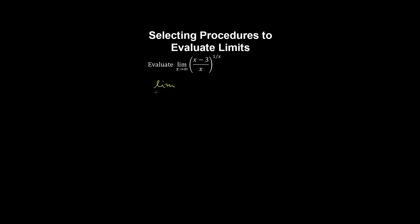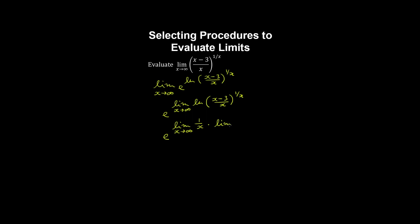Let's evaluate the limit of this function as x goes to infinity. Because x appears in the base and the exponent, we can apply the exponential function and natural log to simplify the limit. Because the exponential function is continuous, we can assume it's continuous at the limit of the natural log. We apply the rules for logarithms to put the exponent outside the natural log, and apply the product rule for limits to split this into two limits. Doing a bit of algebra, we have the natural log of 1 minus 3 on x. As x approaches infinity, this term approaches 0 and the natural log of 1 is 0, so we effectively obtain e to the 0, which is 1.